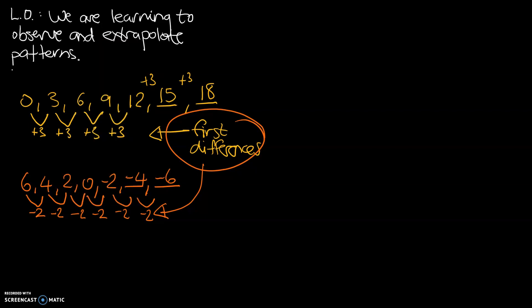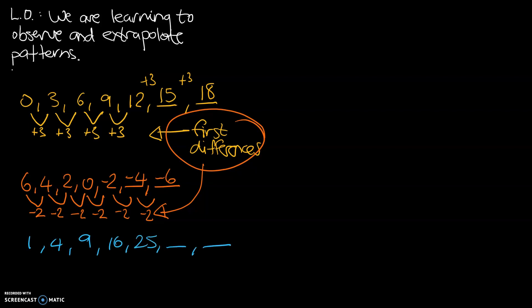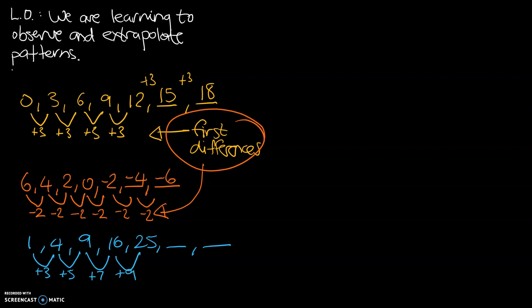Let's have a look at another example that isn't quite as simple. So 1, 4, 9, 16, and 25. How do we identify the next two numbers? Let's look at the first differences. From 1 to 4, we add 3. From 4 to 9, we add 5. And here for the first time, our first differences are different from each other. From 9 to 16 we add 7, and from 16 to 25 we add 9. When there is a difference within the first difference, we need to explore the second difference.